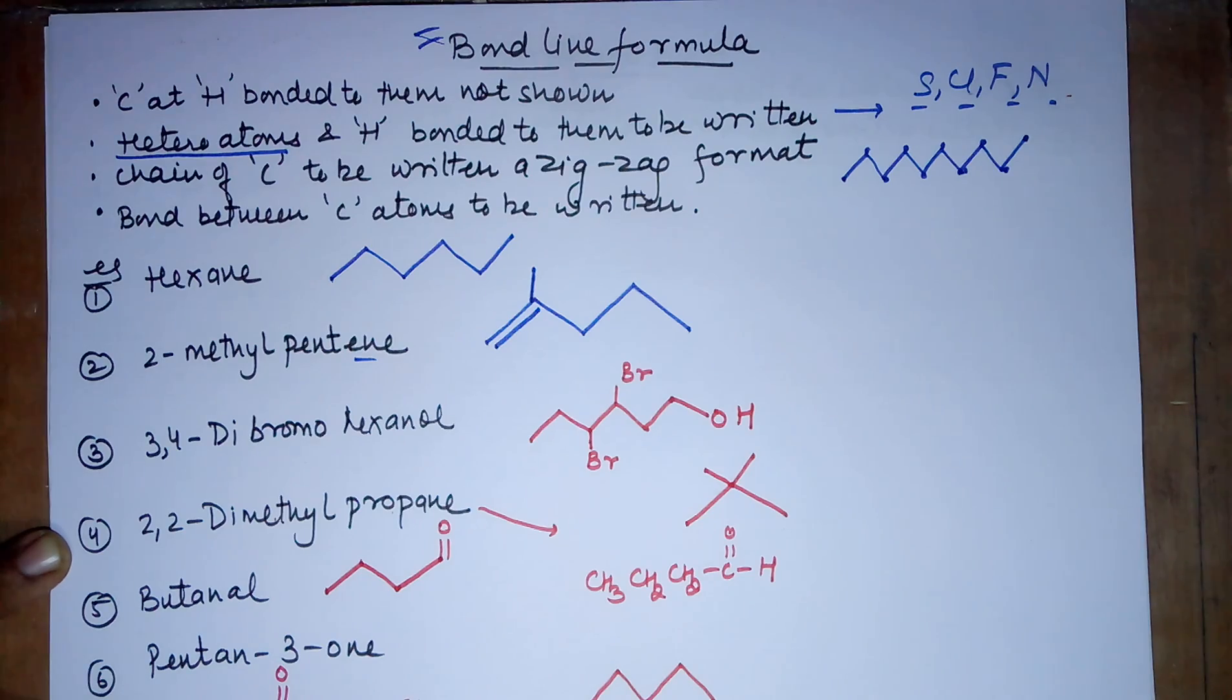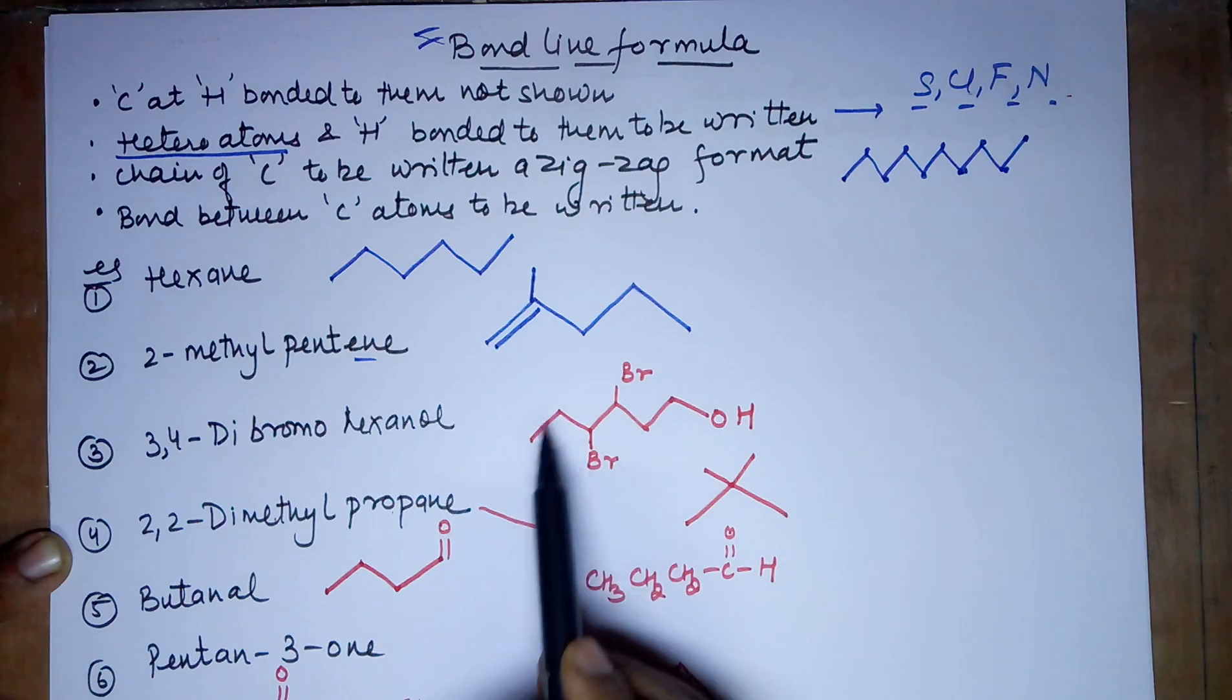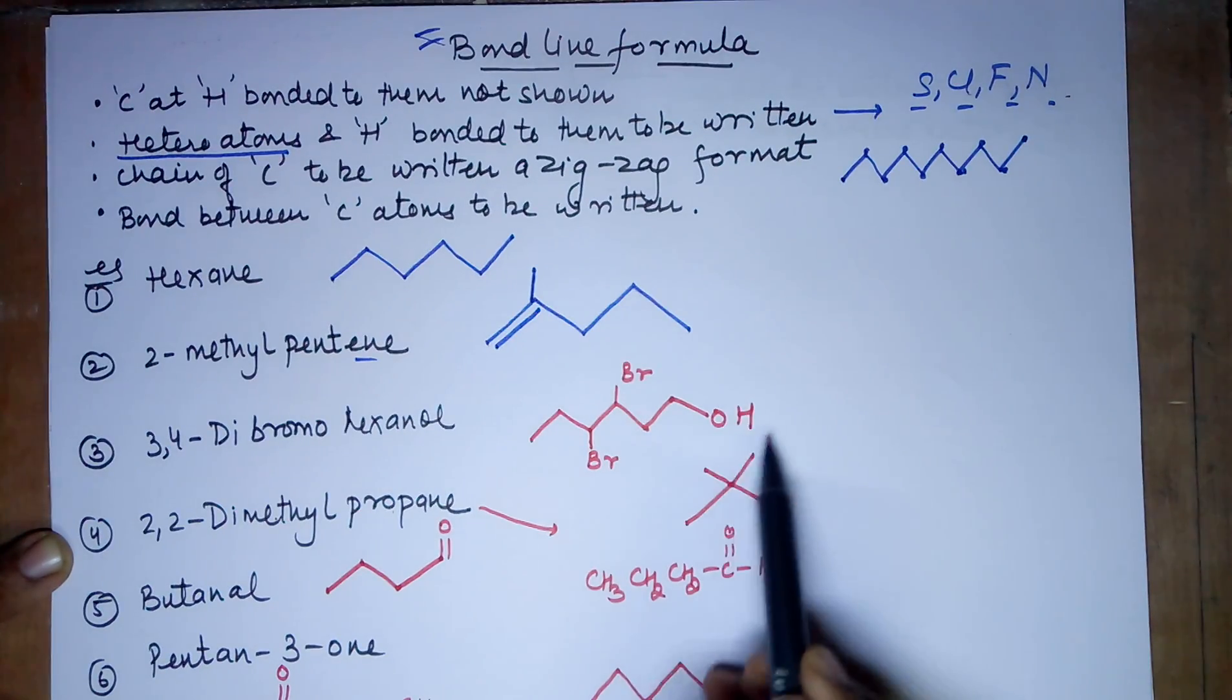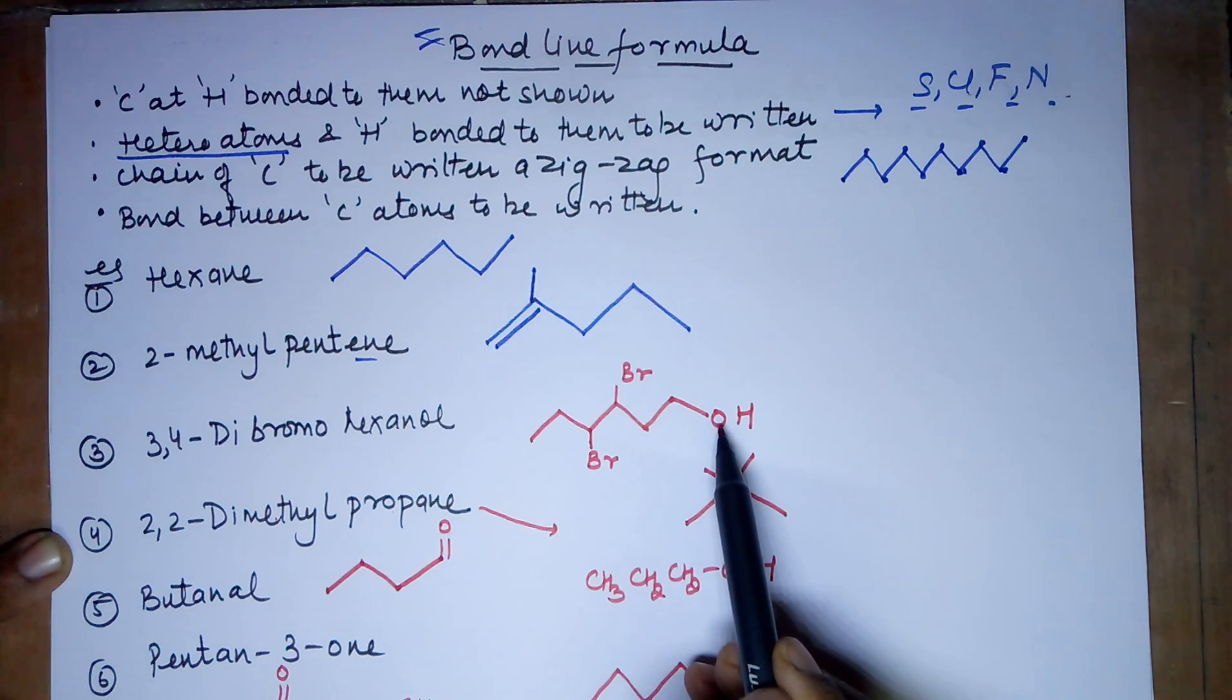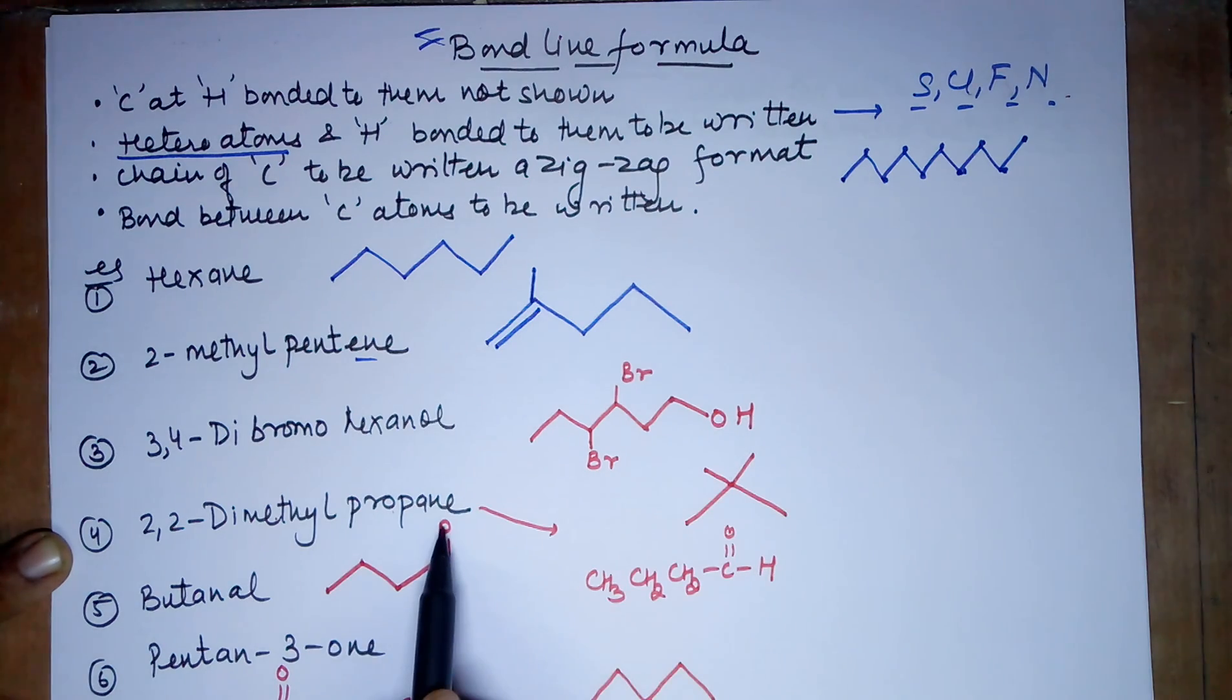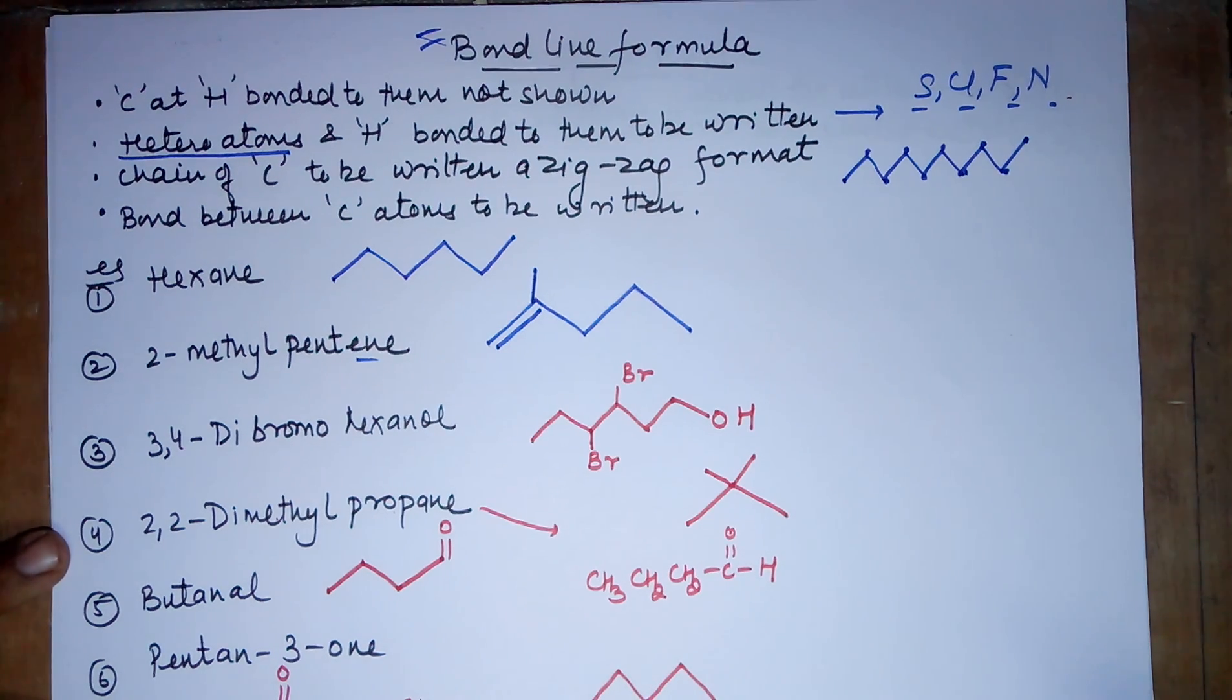This is how you do the bond line structures. None of these structures you can see has got carbons in it. This is not the bond line. This is the structure formula. No carbons. Heteroatoms mentioned. If at all there is a hydrogen, it is the one which is attached to the heteroatom, not otherwise. So no need to mention any carbons and hydrogens. And you need to only mention the bonds. With this, I end my class on bond line formula. I hope I have clarified some of your doubts. If you like the video, please like it. Thank you.